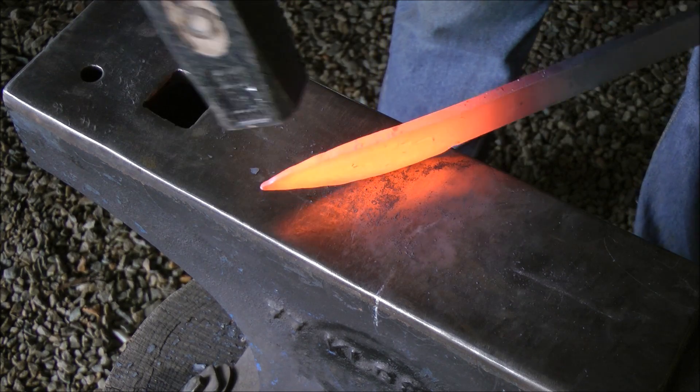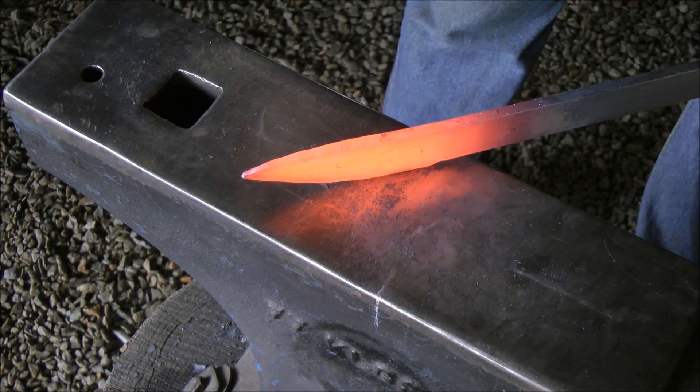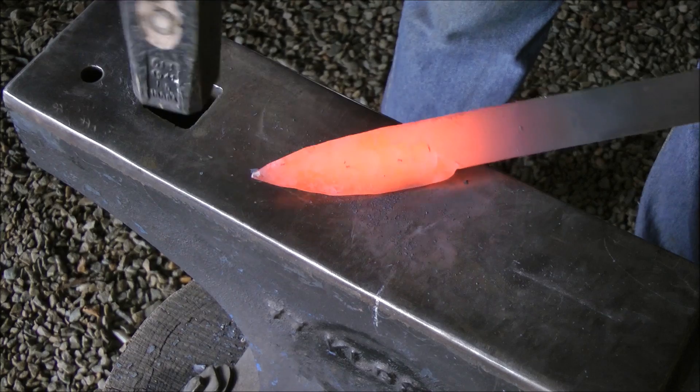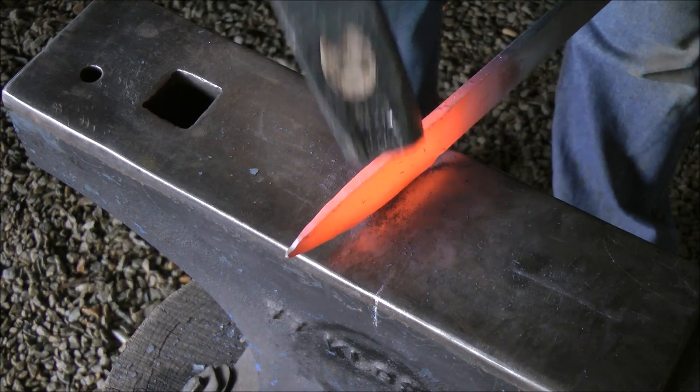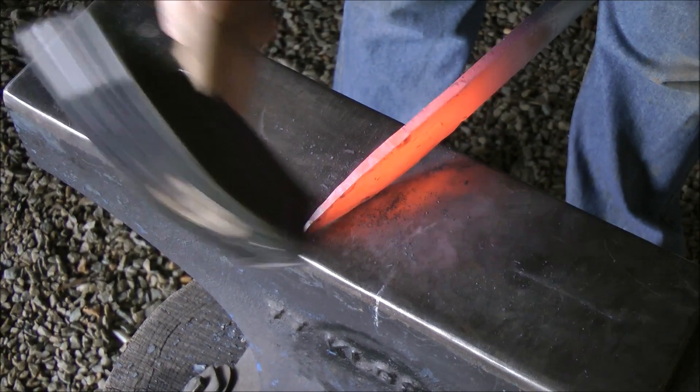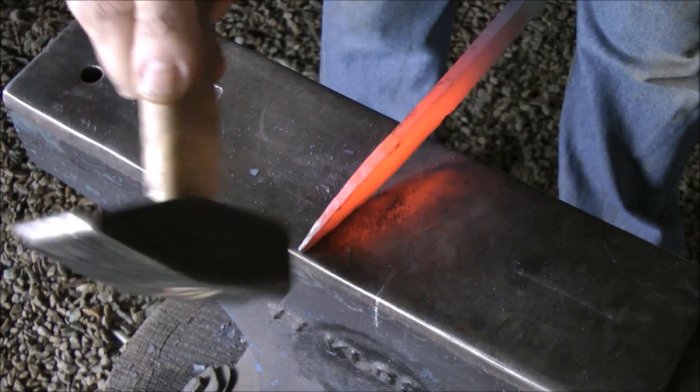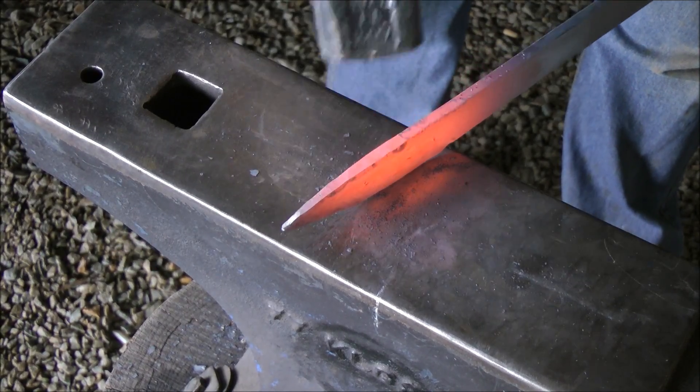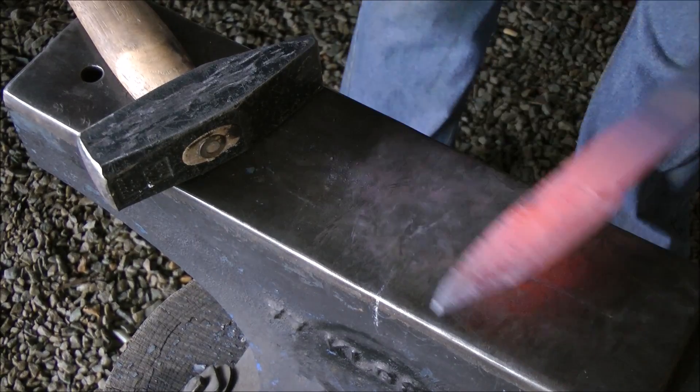Using the method as shown before, on the tip, hammering the tip down, I'm sorting the spine out. Now using the rocking method, I'm hammering both the spine and sorting out my edge.